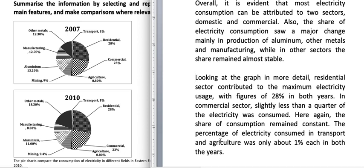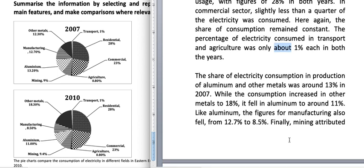The percentage of electricity consumed in transport and agriculture was only about 1 percent each in both years. In transport you can see it's 1 percent and in agriculture it's 0.8, so I've used the phrase 'only about 1 percent' since 0.8 is also about 1 percent.